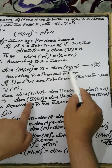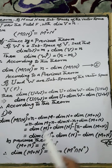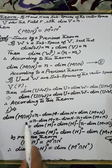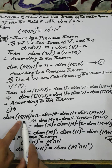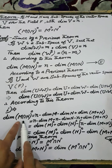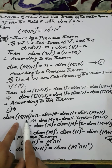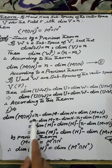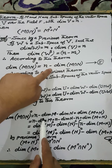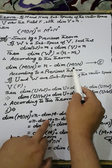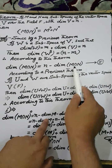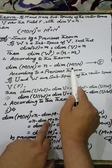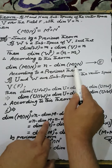Substituting this result into the first equation — replacing U by M and W by N — we have the dimension of the set of all annihilators of M intersection N is equal to n minus the dimension of M intersection N, which by the previous formula equals n minus the dimension of M minus the dimension of N plus the dimension of M plus N.